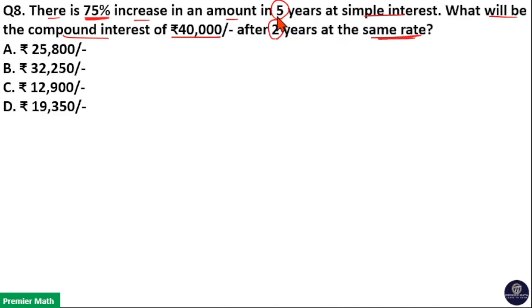For 5 years, the increase is equal to 75%. Then for 1 year, the increase is equal to 75 divided by 5, that is 15%.